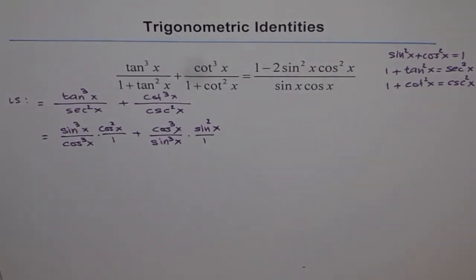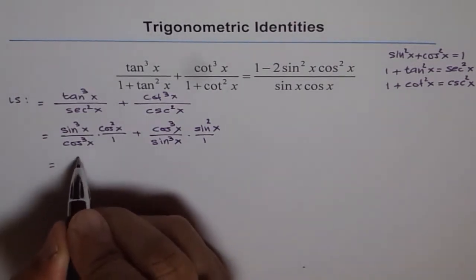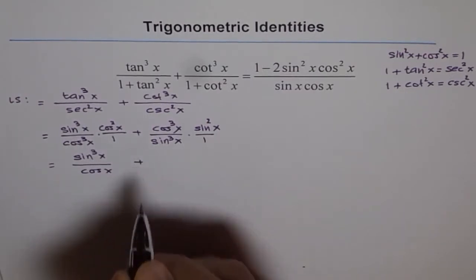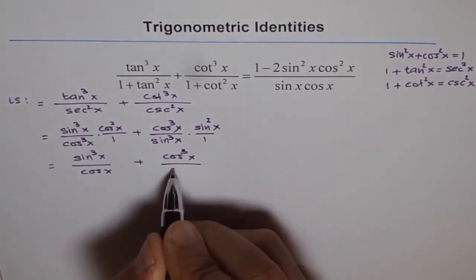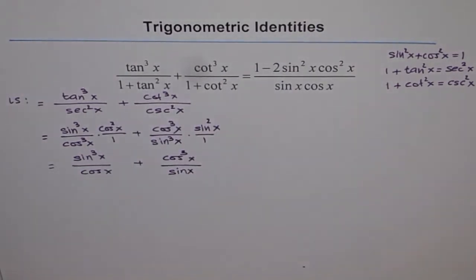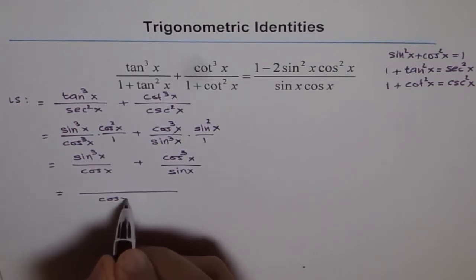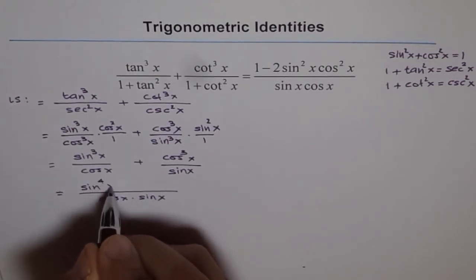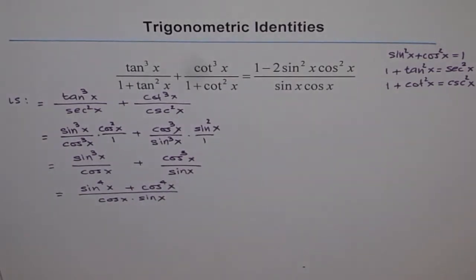We can simplify — two of the terms cancel, leaving sin³x divided by cos x plus cos³x divided by sin x. Taking the common denominator of cos x · sin x, the numerator becomes sin⁴x + cos⁴x.